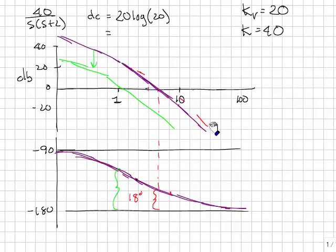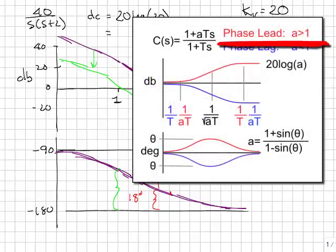I need to hold the DC gain the same, but I need to add some phase. That's the job of a phase lead controller. It has a DC gain of 1, so it doesn't affect low frequency gain, doesn't affect the value of kv, but it adds in a phase shift.